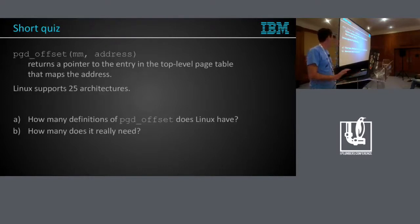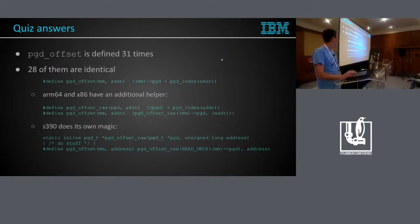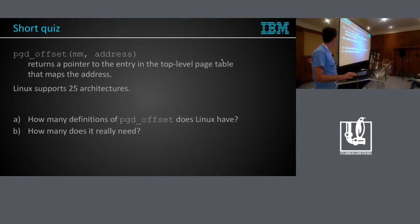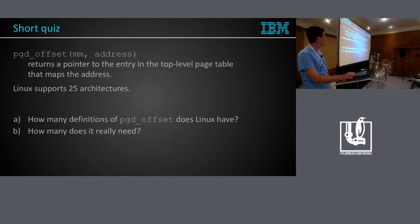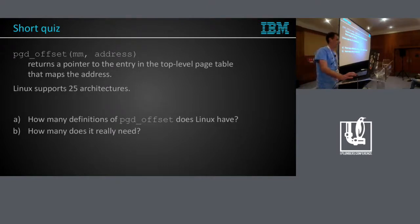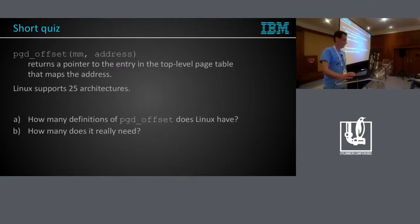Let's start with a short quiz. We have 25 architectures in the kernel. We have a simple macro, a static inline, pgd_offset, that converts an address to an index into the top level of the page directory. So, how many definitions do we have? 25. And how many do we really need? One.